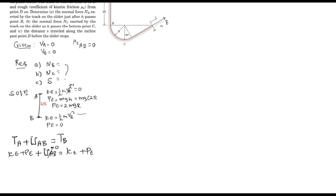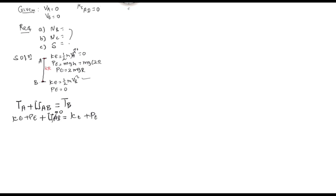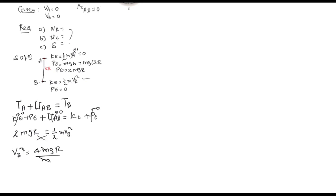Applying the work-energy equation: the energy at A plus work from A to B equals the energy at B. This gives 2mgr = ½mvB², so vB² = 4gr, and the velocity at B is √(4gr). This is the velocity when the particle reaches position B.